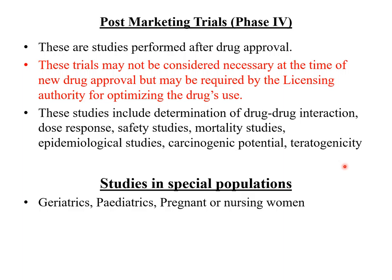Studies in special populations are also carried out along with Phase 4 studies or later. These cover information supporting the use of the drug in children, pregnant women, nursing women, elderly patients, patients with renal or other organ failure, and those on specific chronic medication. The most important population here is the geriatric population, which is quite large, and in which studies need to be carried out to establish the safety, efficacy, and non-toxic potential of the drug.